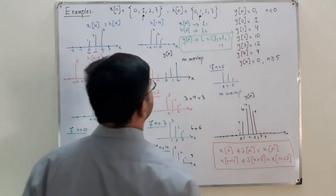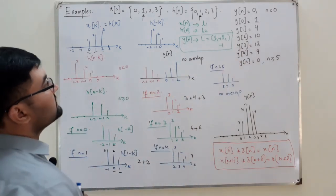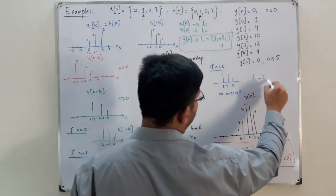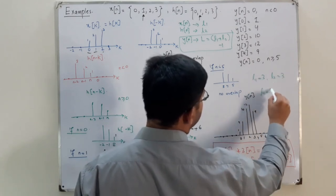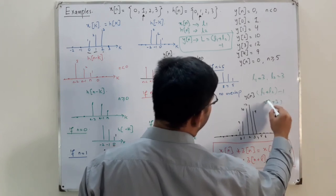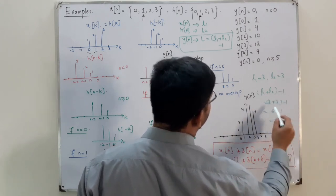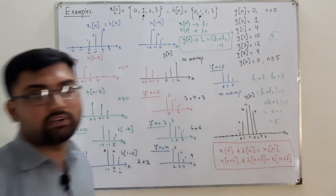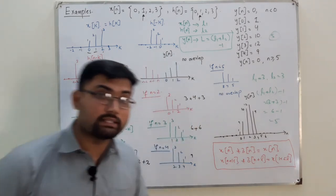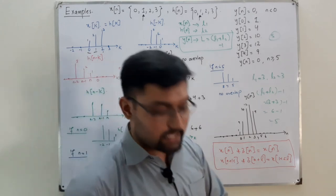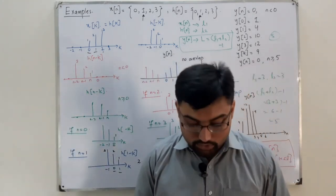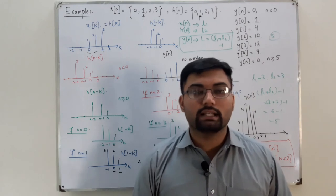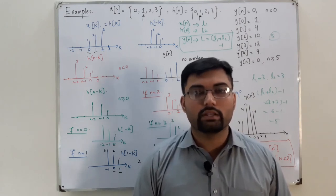Verifying with our example: x(n) had length 3 and h(n) had length 3, so L1 plus L2 minus 1 equals 3 plus 3 minus 1 equals 5. Indeed we had exactly 5 nonzero values: at n=0,1,2,3,4. That's all for today's discrete-time convolution examples. See you in the next lecture on continuous-time convolution. Take care of yourself and everyone around you, and remember me in your prayers. Goodbye.